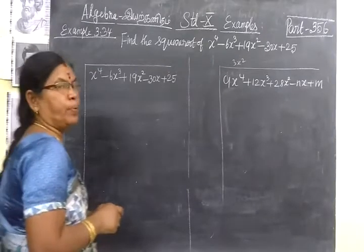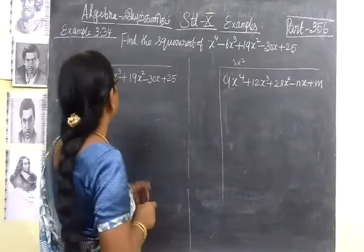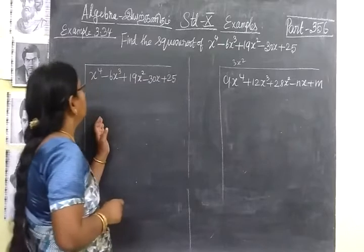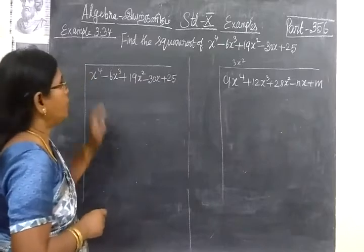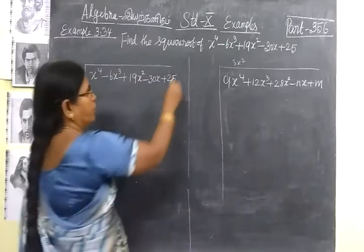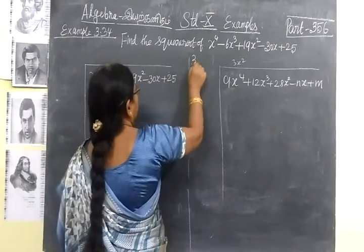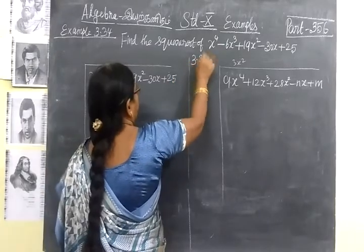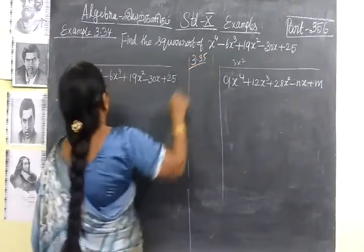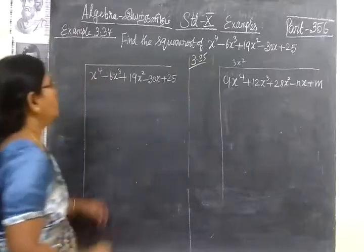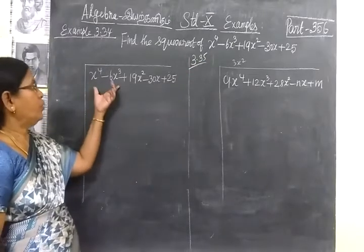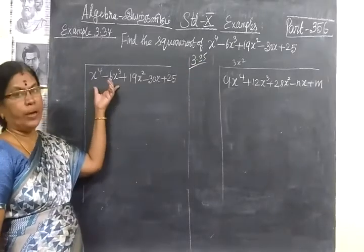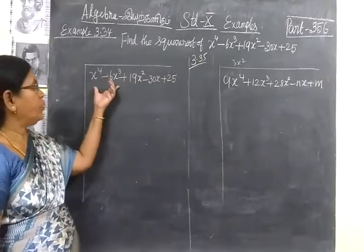Now we see part 3.56, Example 3.34 and 3.35. In Example 3.34, we are going to find the square root of this.